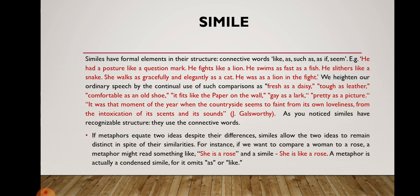Similes have formal elements in their structure — connective words like 'as,' 'such as,' 'as if,' or 'seem.' For instance: 'He had a posture like a question mark,' 'He fights like a lion,' 'He swims as fast as a fish,' 'He slithers like a snake,' 'She walks as gracefully and elegantly as a cat,' 'He was as a lion in the fight.' We heighten our ordinary speech by the continual use of comparisons such as 'fresh as a daisy,' 'tough as leather,' 'comfortable as an old shoe,' 'fits like the paper on the wall,' 'gay as a lark,' 'pretty as a picture.'